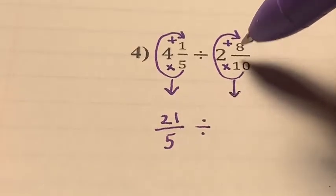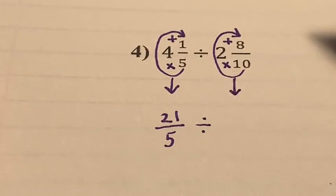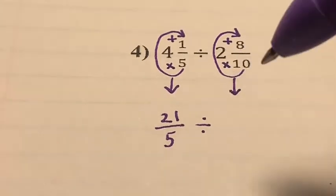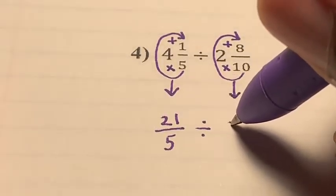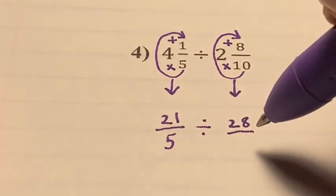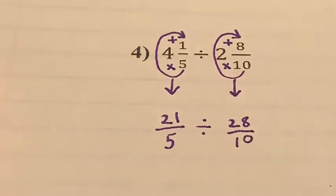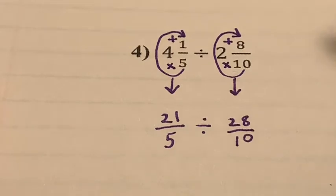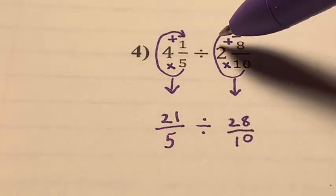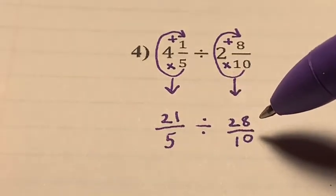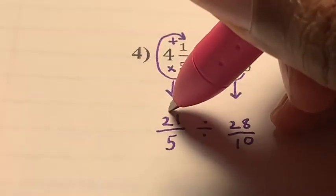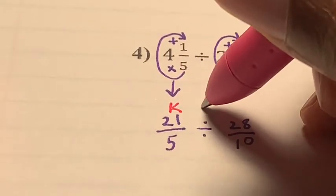Let's convert the second mixed number: 10 times 2 is 20, plus 8 is 28, over 10 — you keep the denominator the same. Now that we have converted both mixed numbers into improper fractions, now we can do keep, change, flip: keep 21 over 5 the same, change the division symbol into a multiplication symbol, and flip 28 over 10 into its reciprocal — which is 10 over 28.